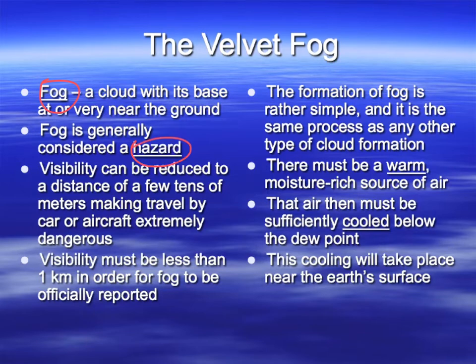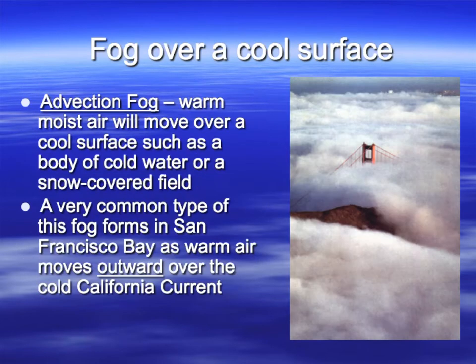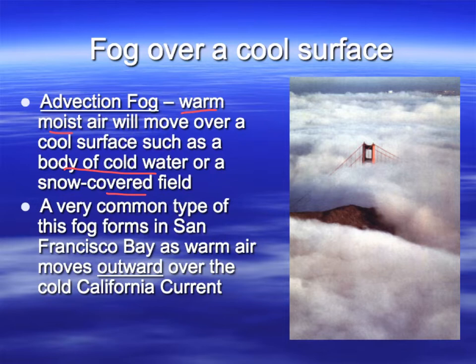The problem with fog is it can be a hazard because it can really reduce visibility for drivers and pilots. Advection fog: warm moist air moves over a cool surface such as a cold body of water or a snow-covered field. The warm moist air gets over that cool surface, which drops its temperature, condensation occurs, and you get fog. This happens quite a bit in the San Francisco Bay area because warm moist air over the land spills out over the cold Pacific Ocean.